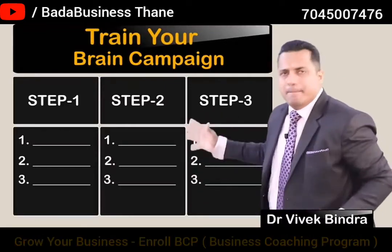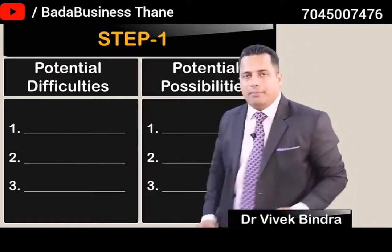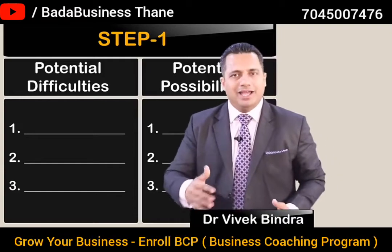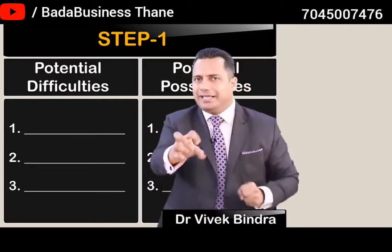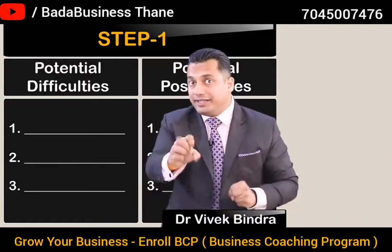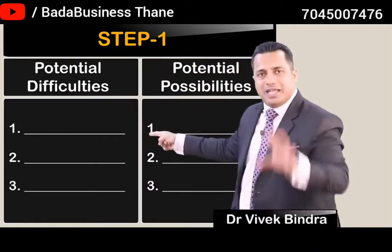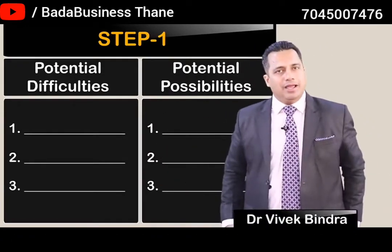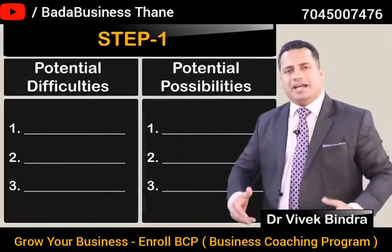This is the Train Your Brain campaign. I am giving you three frameworks. The first framework: when achieving your goal, list down your three potential difficulties and corresponding three potential possibilities. On your path you will encounter full stops, speed breakers, and energy-sucking vampires. Write down all those difficulties first — anticipate them. Then, against each difficulty, write the corresponding potential possibility.